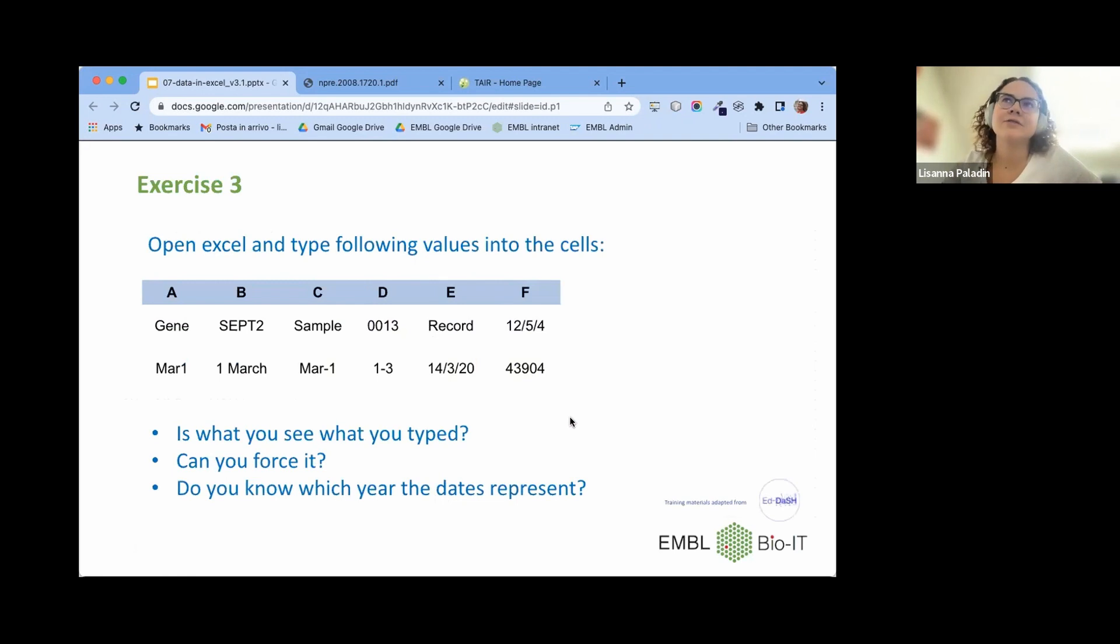So exercise three, we're not going to do it together because we are a little bit late on schedule. You're going to have to believe me about this, but you can also test later on. If you open Excel or any other, for example, Google Sheets, and try to fill in these different ways to write dates, it's highly probable that Excel would reformat them. So whatever you type here, it's highly probable that Excel will understand it in a different way. Especially with dates, but there are so many things that can be interpreted as dates that are not, especially in the biological field that are not dates. For example, gene names.